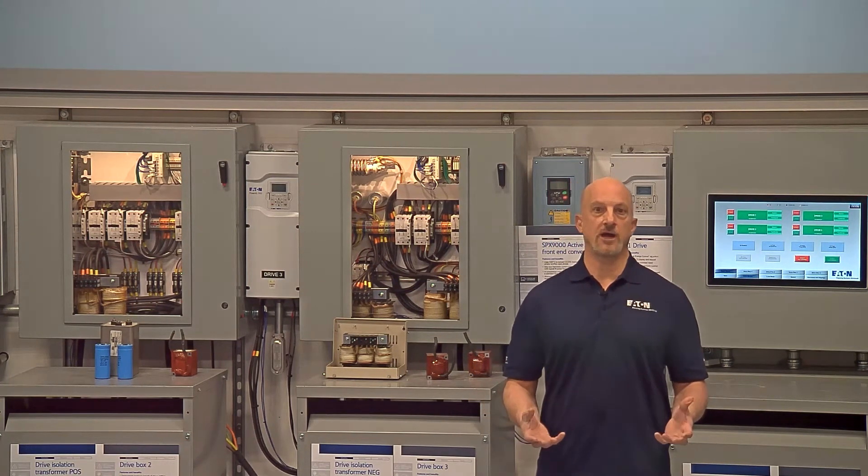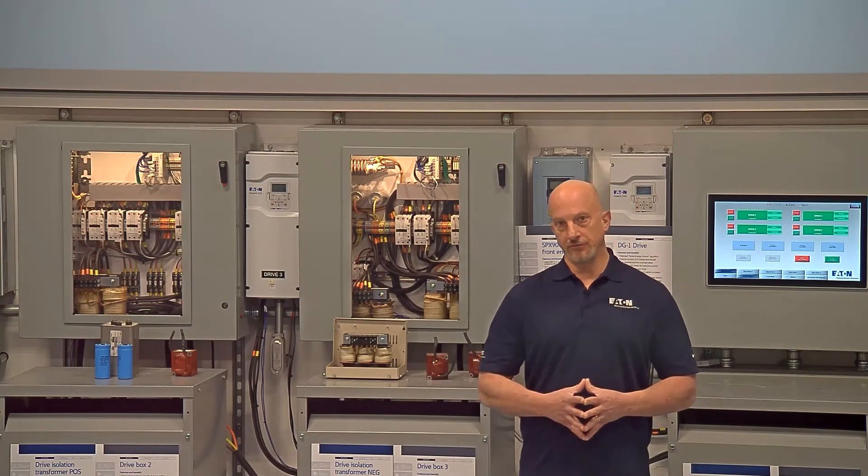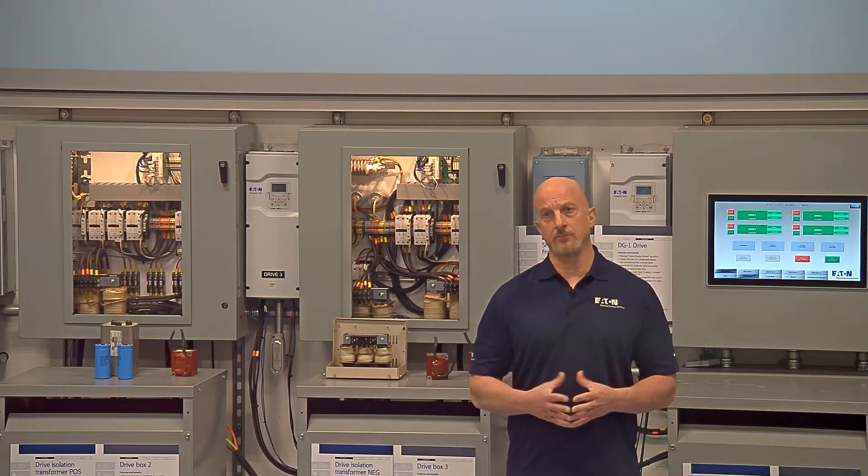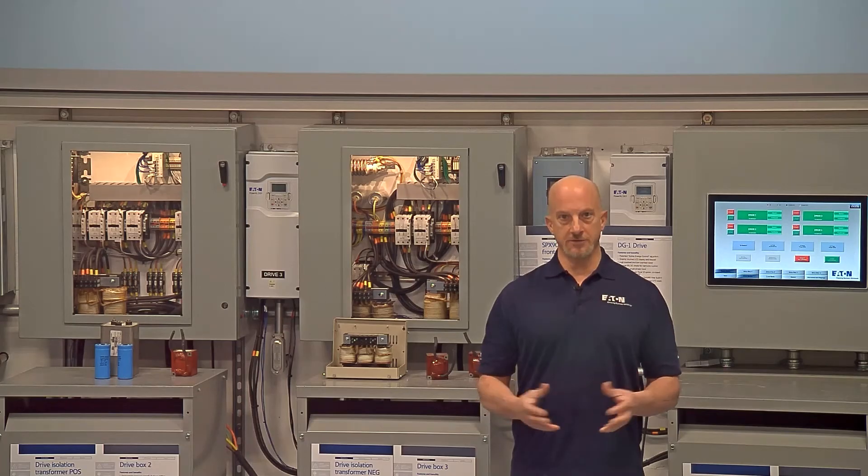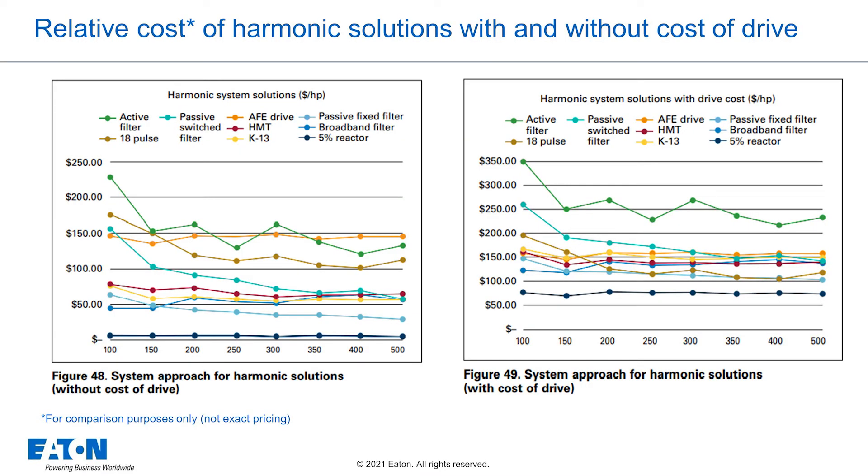As an example for drives, if you were going to use drives that were maybe 250 horsepower, you probably want to look at an 18-pulse drive as opposed to buying the drive, buying a harmonic filter, putting the two together, and the cost associated with the installation of everything because at some point it's diminishing returns in terms of trying to get the same harmonic effect out of the add-on feature.